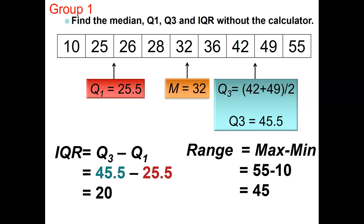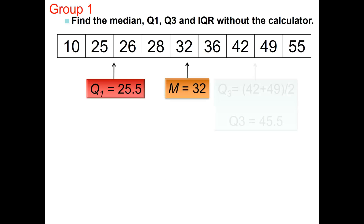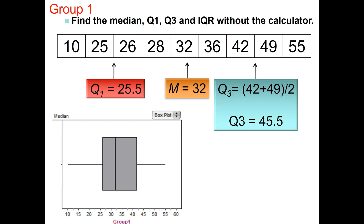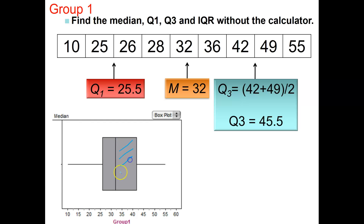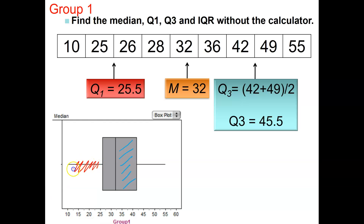We did this example in class, but I wanted to review quartiles, interquartile range, and range. Looking at the box plot: there is 25% of the data in the blue box, 25% in the red whisker, 25% in the orange whisker, and 25% in the purple box. Even though the purple box is smaller than the blue box, each box and each whisker represents 25% of the data.